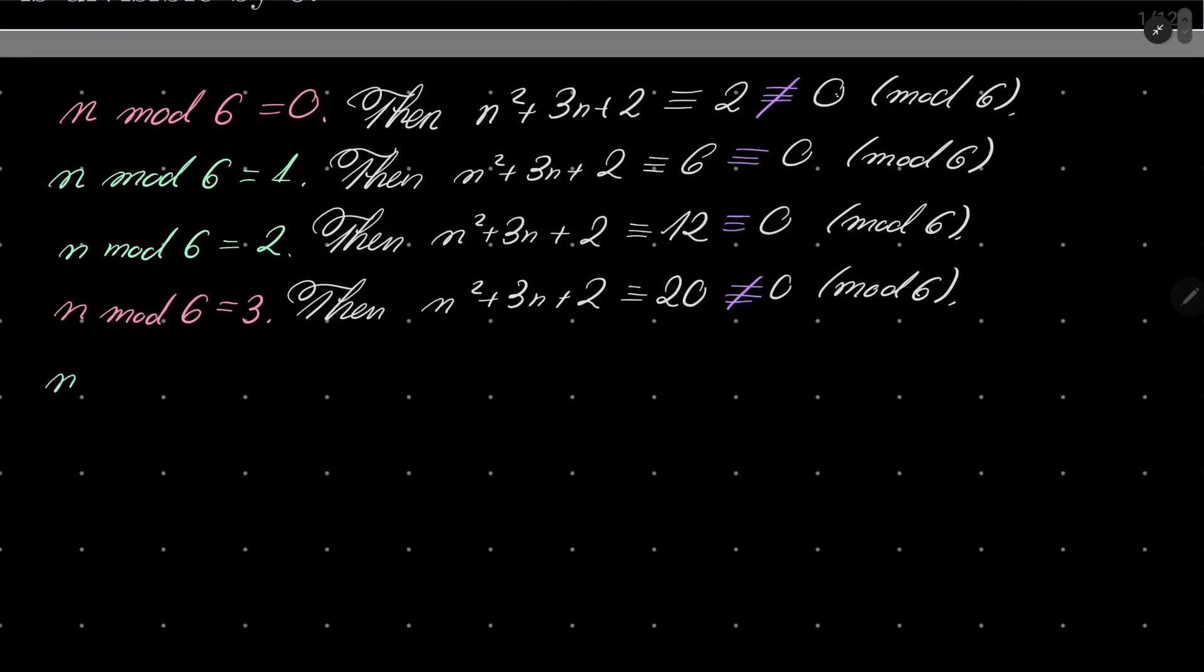n ≡ 4 (mod 6). Then n² + 3n + 2 is congruent to 16 + 12 = 28, plus 2 is 30. 30 is congruent to 0 modulo 6.